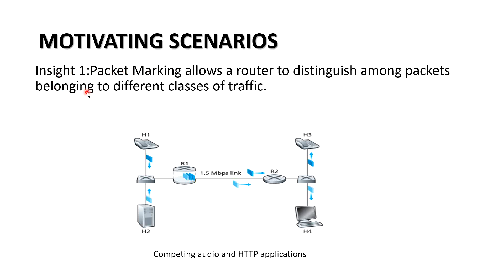A motivating scenario: let's say h1 is sending audio data to h3, and h2 is sending HTTP datagram to h4. The link rate between r1 and r2 is 1.5 Mbps, the bit rate for audio is 1 Mbps, and you can take any random bit rate for HTTP. First, we mark packets according to their classes — since the audio link is more important, audio is marked first, then HTTP. This is Insight 1: packet marking allows a router to distinguish among packets belonging to different classes of traffic.